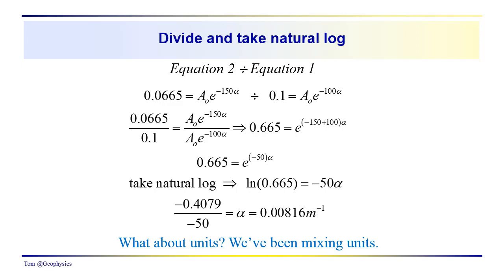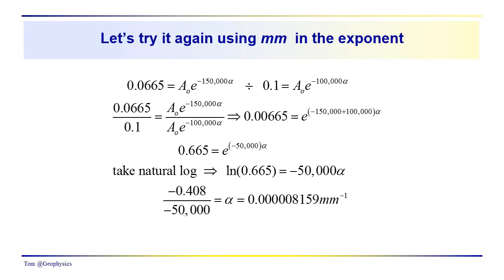So we've been mixing the units. Is that going to be a problem? What did you, did you encounter that? Did you think about that as you were solving the problem? Let's try again and we'll use millimeters in the exponent in this case. So we have that 0.0665 millimeters again divided by A0 times e to the, and then we're going to use millimeters up here. So this would be minus 150,000 millimeters times alpha divided by 0.1 millimeters is equal to A0 e to the minus 100,000 millimeters times alpha. So we go through this process, the same process that we went through before. We're just dividing this equation by this equation. We get 0.00665 is equal to e to the minus 150,000 plus 100,000 times alpha. That gives us a minus 50,000 here instead of a minus 50.